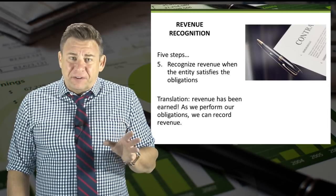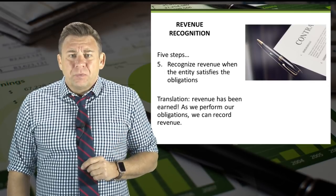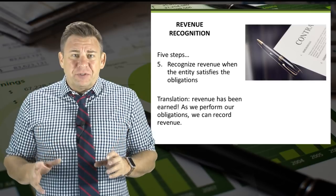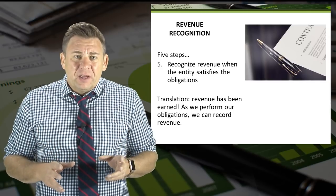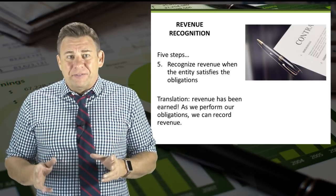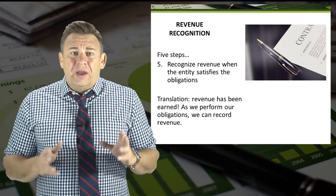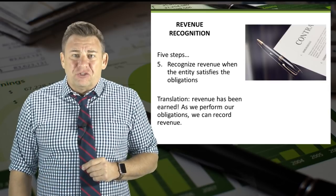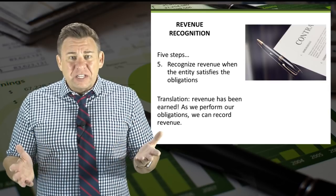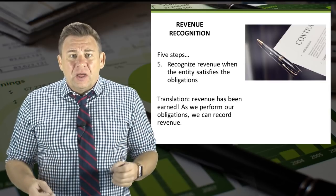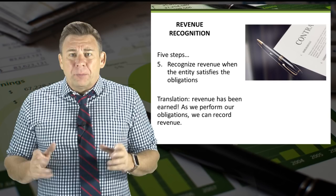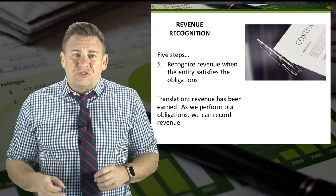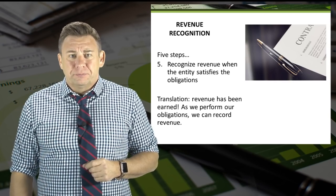Step five is the final step. If the first four steps are met, then we can recognize revenue when we satisfy the obligations, meaning revenue has been earned. As we perform our obligations, we can record the revenue.